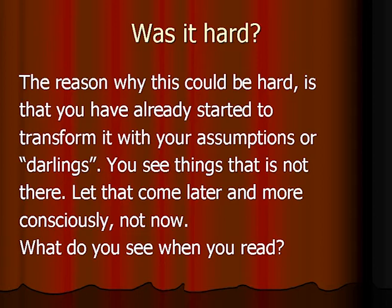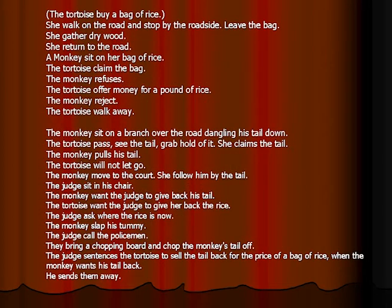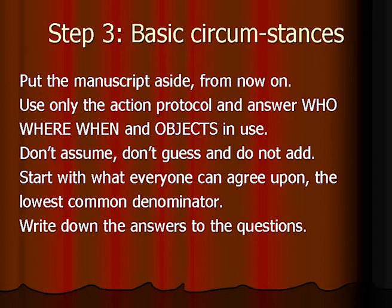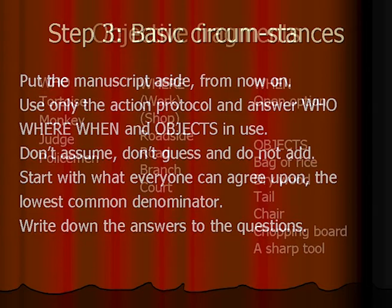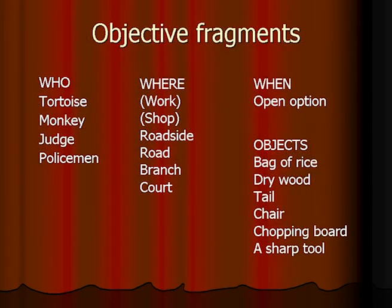So what do you see now when you read the story? We can put the manuscript aside and look only at the action protocol or police protocol — we only have this to relate to now. We have to start answering who, where, when, and the objects in use. We don't assume, don't guess, and do not add anything that is not there. Start with what everyone can agree upon and write down the answers to the questions: when, where, who, what, and objects.